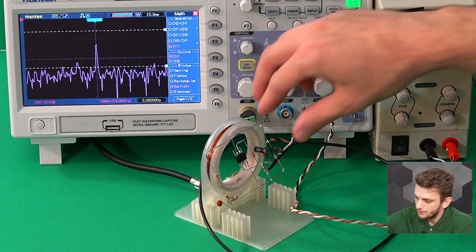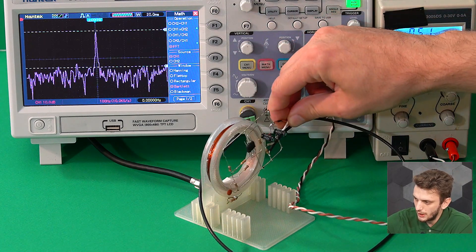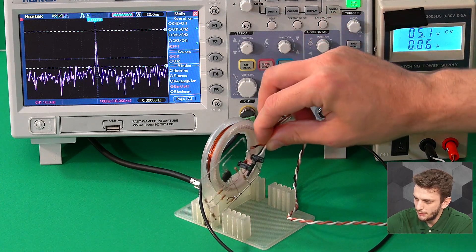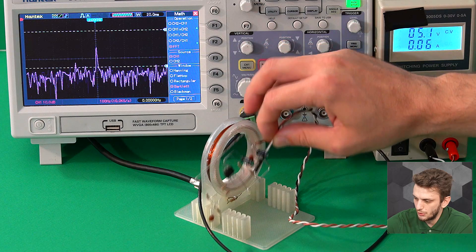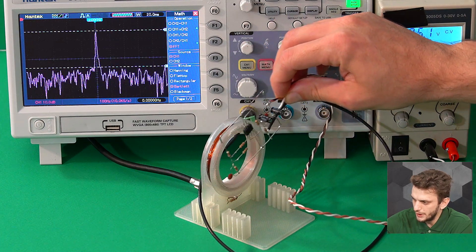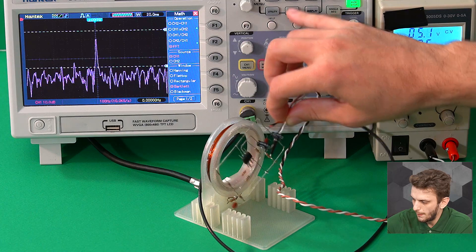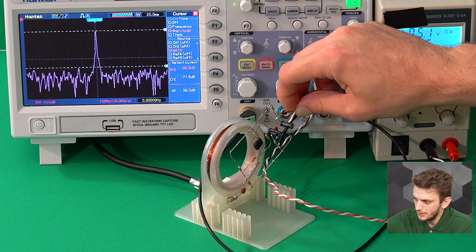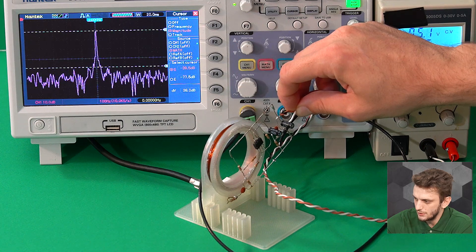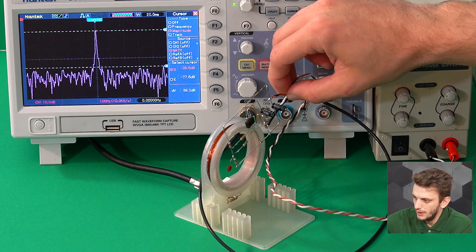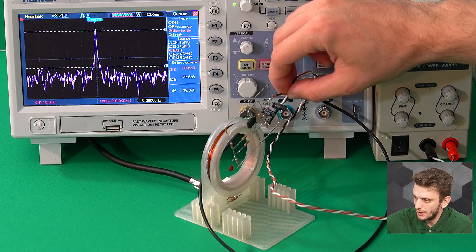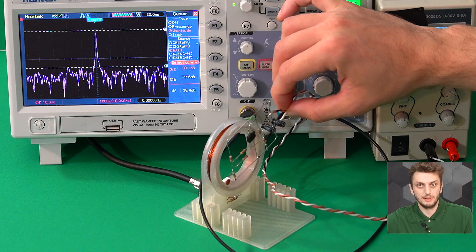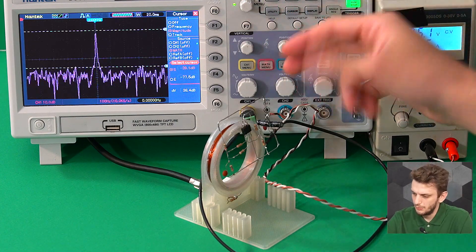So we can see here our 2 kilohertz spike. If I quickly turn off the generator, we see it completely disappears, so this is not coming from the environment but rather from our inductor. So I turn it back on again, and now based on how the circuit is placed around the inductor, we can see that the spike is larger or smaller. And the maximum value that we can obtain is about minus 39.5 decibels. Let's say about minus 39.